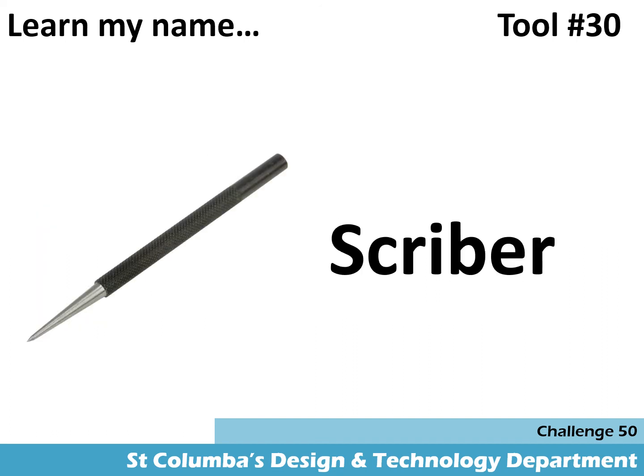Finally for this week we have tool number 30, which is the scriber. The scriber is used to draw lines on sheet metal.